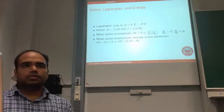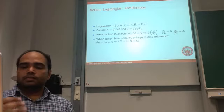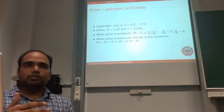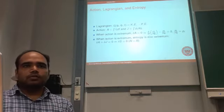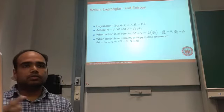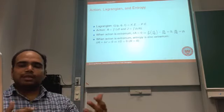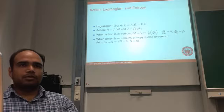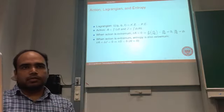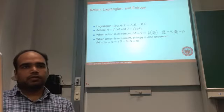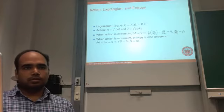The Lagrangian density is kinetic minus potential, written as a function of coordinates, velocity, and time. The action is the time integral of the Lagrangian. The usual action A = ∫L dt and the abbreviated action J = ∫p dq are related through the Hamilton-Jacobi equation, which states that the time rate of change of the action plus the Hamiltonian is conserved. For a non-dissipative, time-independent Hamiltonian, these two actions achieve their stationary value at the same point — implying a unique path whether viewed in (p,q) phase space or in (time, energy) space.